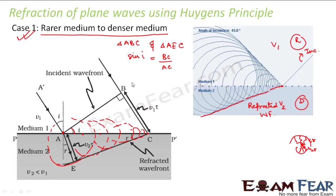Similarly, in triangle AEC, what would be sin R? This is my angle of refraction — the angle which the refracted ray makes with the normal. This is my incident wave front, this is the direction of the incident ray, this is the direction of the refracted ray, and these are the incident and refracted wave fronts. This is my angle of refraction. This total angle is 90 degrees, so this angle is 90 minus R. If this is 90 minus R and this is 90, then in triangle AEC, angle C will be angle R.